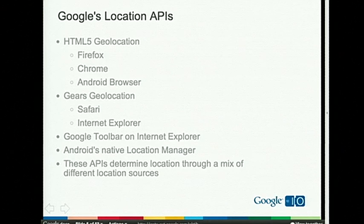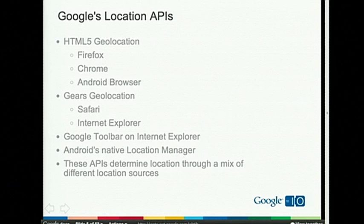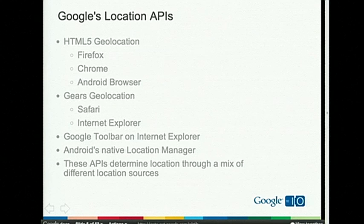Today there are a number of APIs available for getting location in the browser. A quick show of hands — how many of you are familiar with the HTML5 Geolocation API? This is an API supported in Firefox 3.5, 3.6, in Google Chrome, in the Android browser. With a few lines of JavaScript, you can get the user's location and use it within your applications. Similarly, there's a Gears Geolocation API compatible with the HTML5 API, available in Safari and Internet Explorer, and a Google Toolbar implementation for Internet Explorer on Windows.